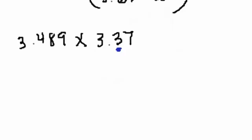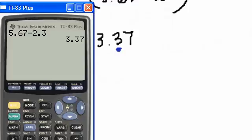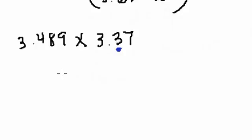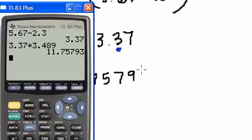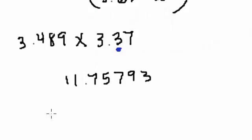Alright, let's plug this in the calculator. So 3.37 times 3.489.